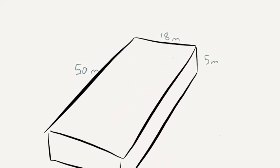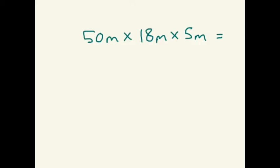So we have 50 meters by 18 meters by 5 meters. If we take 50 times 18, that's gonna be 900 meters squared. That's the area of the surface of the top and the bottom of the rectangular prism of the reservoir.